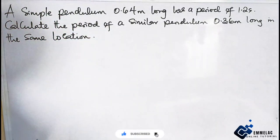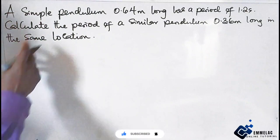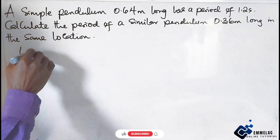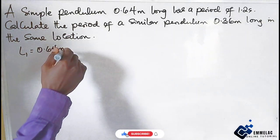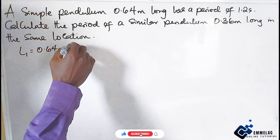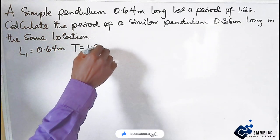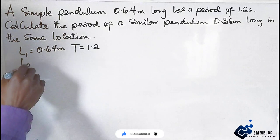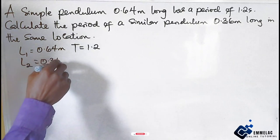What we need to do first is identify the known values. We have length 1, L1 equals 0.64 meters, and the period T1 equals 1.2 seconds. Now L2 equals 0.36 meters.